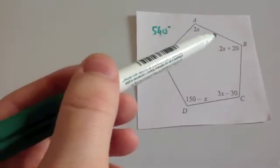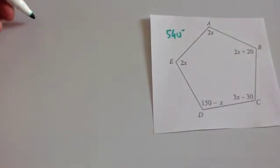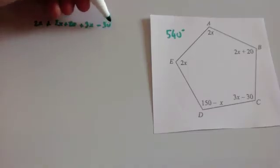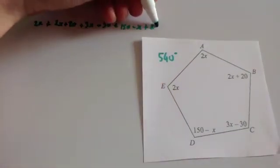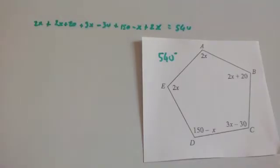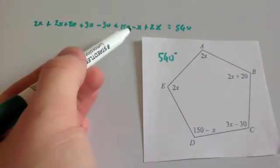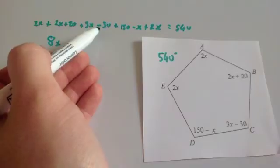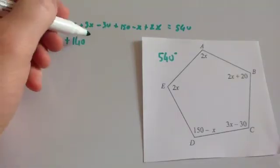So the angles in this pentagon add up to 540 degrees. Adding all the angles: 2x plus 2x plus 20 plus 3x minus 30 plus 150 minus x plus 2x equals 540. Simplifying the x terms: 2x plus 2x plus 3x minus x plus 2x equals 8x. For the constants: 20 minus 30 is minus 10, and minus 10 plus 150 is plus 140.